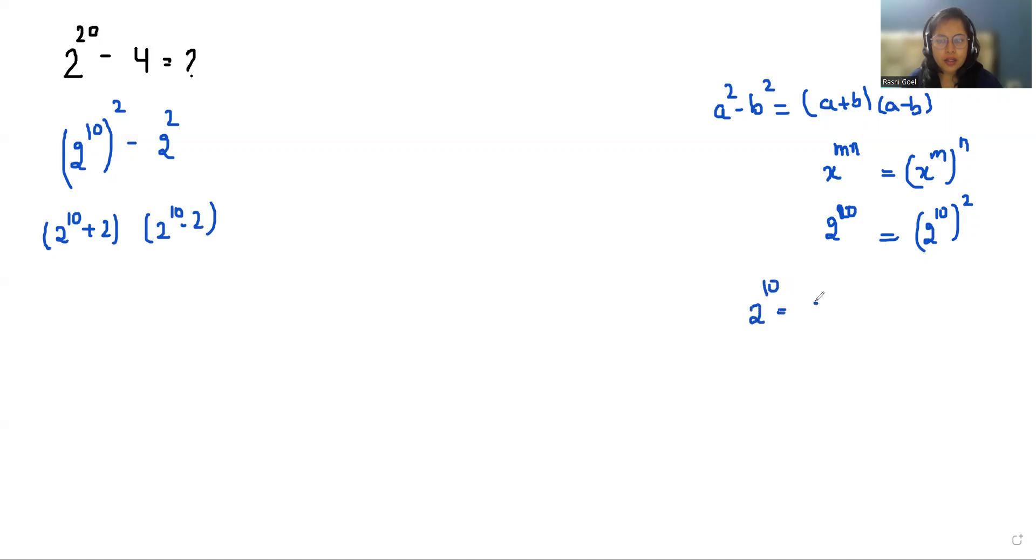Now 2 power 10 we can break it as 2 power 4 times 2 power 4 times 2 power 2. And 2 power 4 is 16, so 16 times 16 times 4, so 16 times 16 is 256 times 4 is 1024.